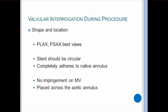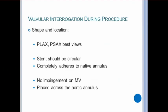The sonographer should interrogate the shape and location of the aortic valve using the parasternal long and short axis views. Looking at the shape of the stent, it should be completely circular and the circumference of the stent should be fully opposed to the annulus. If it's not completely circular or if there is space between the stent and the aortic annulus, the valve may be undersized, which may not treat the patient's aortic stenosis, or the valve may not be fully expanded, leading to potential paravalvular leaks. To evaluate valve placement, look for any impingement on the mitral valve or if it's above the aortic annulus. If any of these situations occur, there is an increased risk for the valve to migrate either down into the left ventricle or up through the aorta.